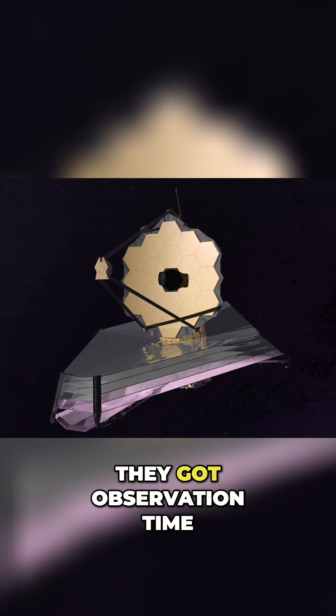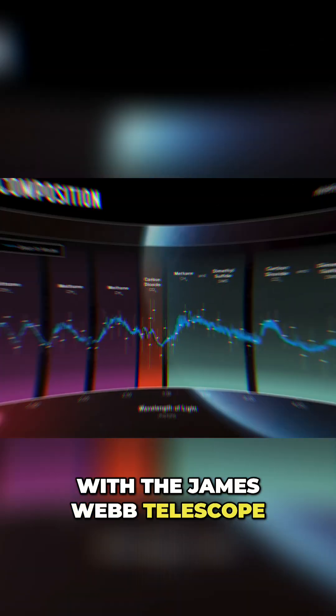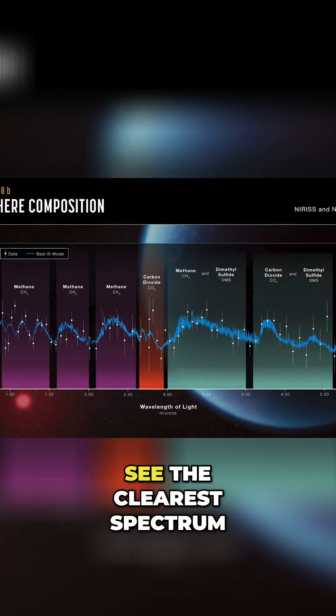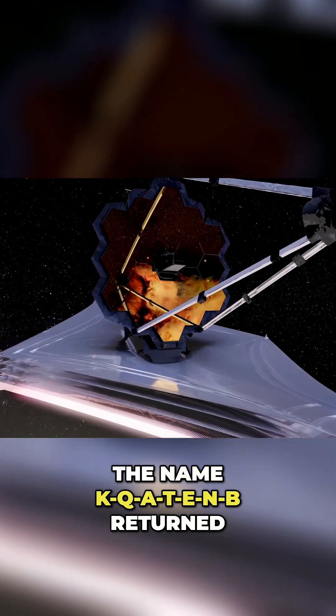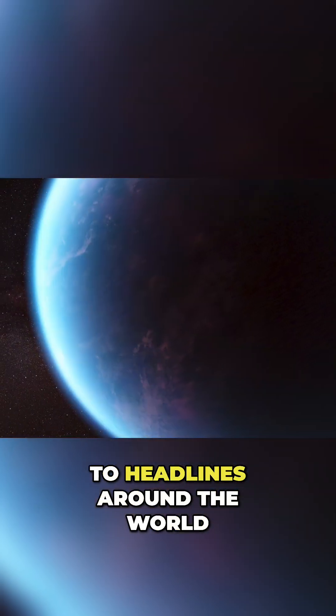In 2023, they got observation time with the James Webb Telescope, finally allowing them to see the clearest spectrum of the planet's atmosphere. As a result, the name K218b returned to headlines around the world.